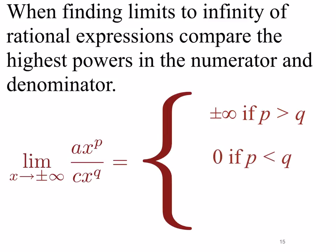The second possibility is p less than q — a higher power in the denominator — which gives a result of zero, since the x's cancel leaving a constant over a power of x. The third possibility is p equals q: x to the power p cancels completely with x to the power q, leaving just the ratio a divided by c as the limit. So let's look at an example and see if we can apply this.